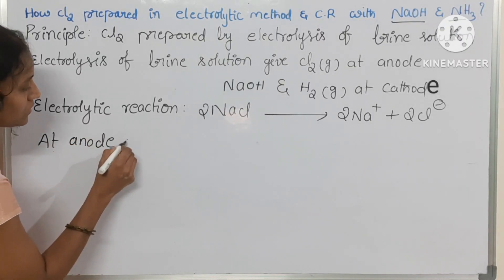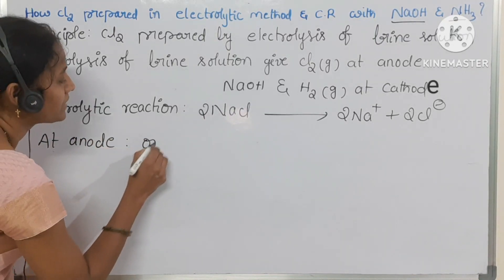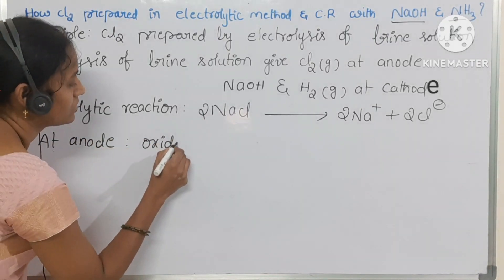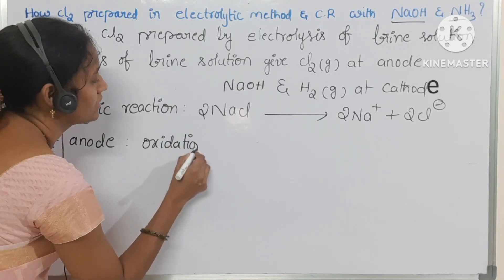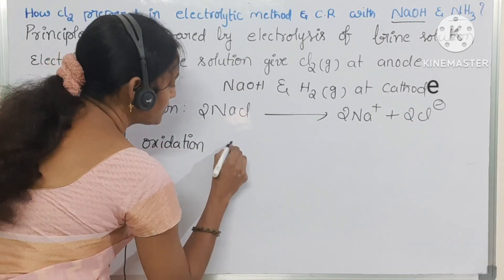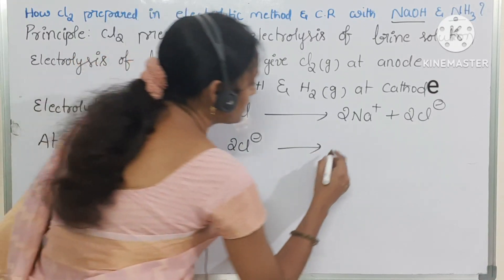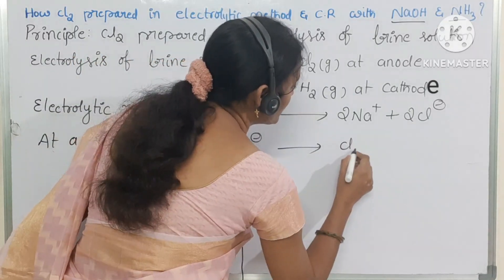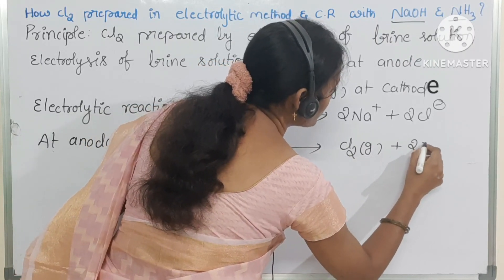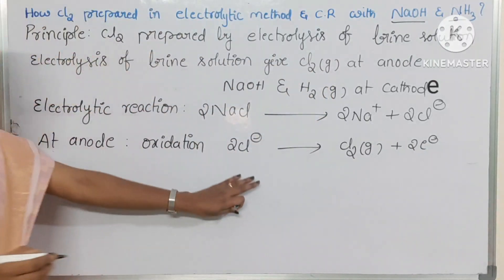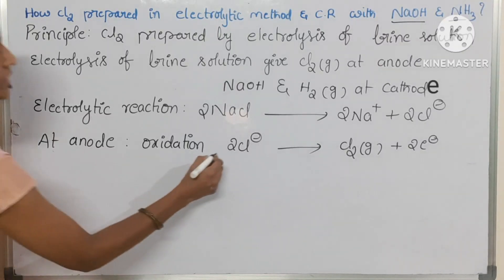At the anode, oxidation will happen. The oxidation reaction: 2 moles of chloride ions are converted into 1 mole of chlorine gas and 2 electrons are liberated. That is why it is the oxidation reaction.